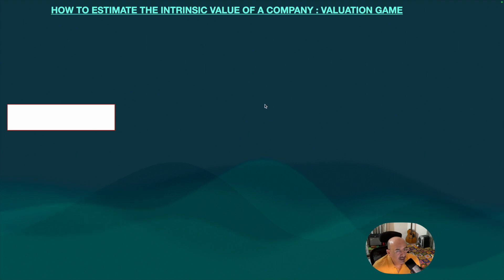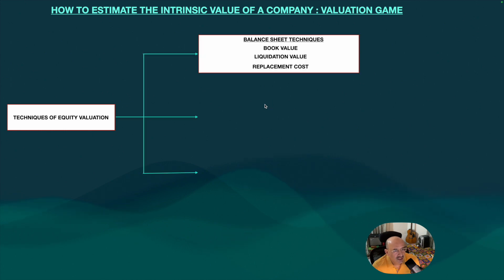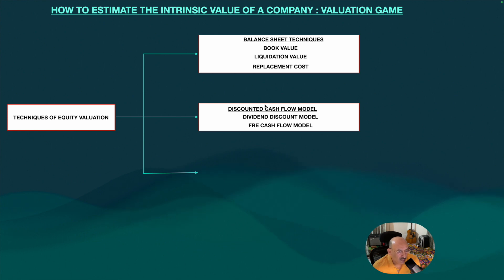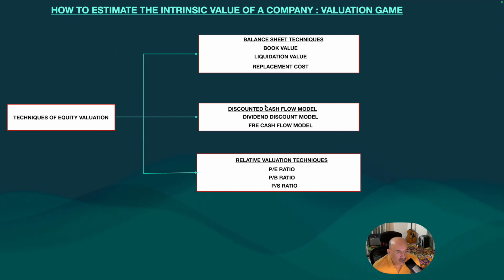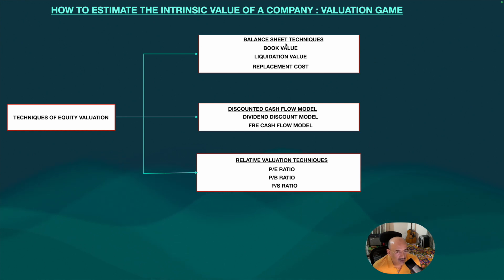To estimate the intrinsic value of a company, there are three methods of equity valuation. One is balance sheet technique — including book value, liquidation value, and replacement cost. Two is discounted cash flow model — including dividend discount model and free cash flow model. Three is relative valuation techniques — including price to earnings ratio, price to book ratio, and price to sales ratio. In the next lecture, we will do equity valuation using these methods.